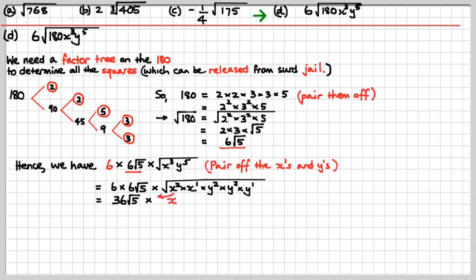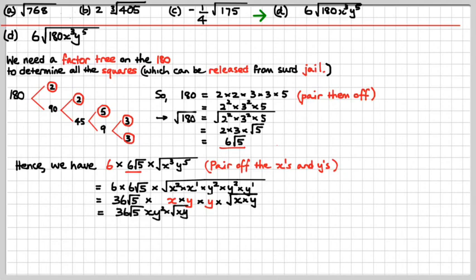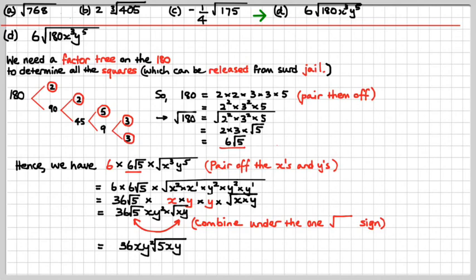Now, he comes out of square root jail, and this one comes out of square root jail — both of those y squareds come out, just leaving the x to the 1 and the y to the 1 in there by themselves. We're nearly there — let's simplify what we've got: 36 root 5 times xy squared times root xy. We might as well combine these square root terms for good housekeeping. So we get 36xy squared times the square root of 5xy. That's it — and you're a star.